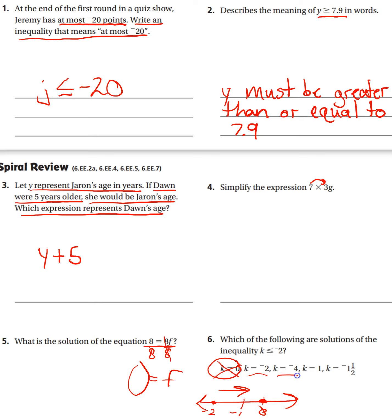So you just need to check these other four numbers for K and see if they make the inequality true. If they do, they're part of your answer. If they don't, you can cross them out. They're not part of your answer.